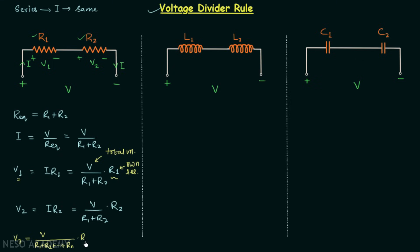The voltage divider rule for a series combination tells us that the voltage is divided according to the resistance values — when the resistance value is more, the voltage across it will be more.